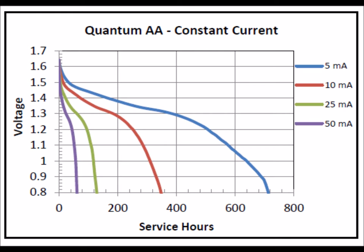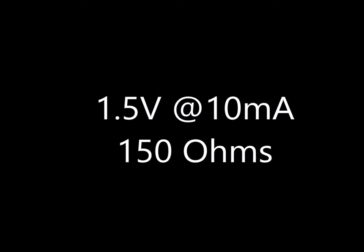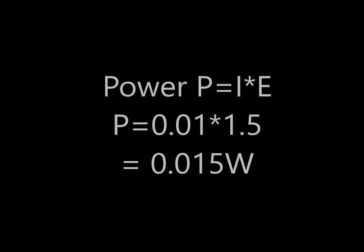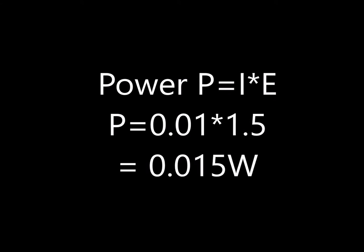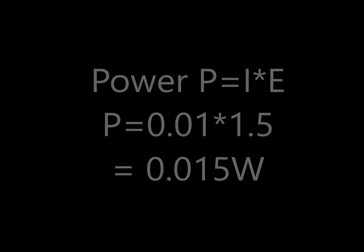What resistor value would you pick? Pick a middle spot somewhere? Let's pick one just to see what the numbers look like. If we want to run at 1.5 volts — the nominal voltage — and 10 milliamps, that's a 150 ohm fixed resistor. The resistor isn't particularly large either, because at 10 milliamps and 1.5 volts that's only 0.015 watts.